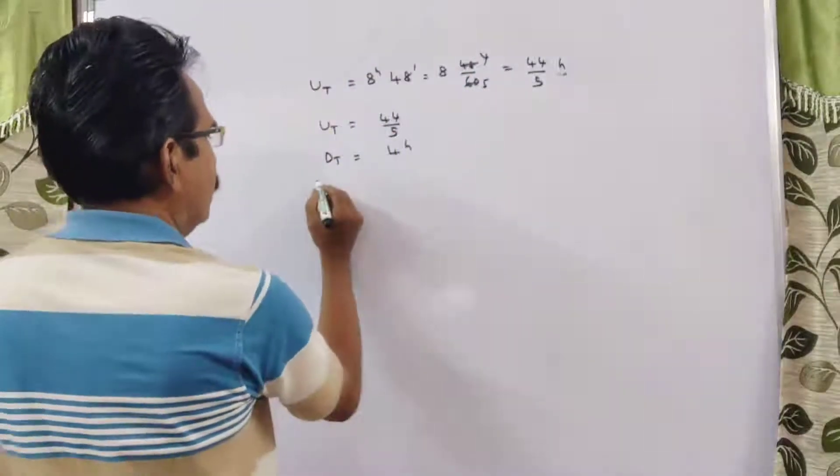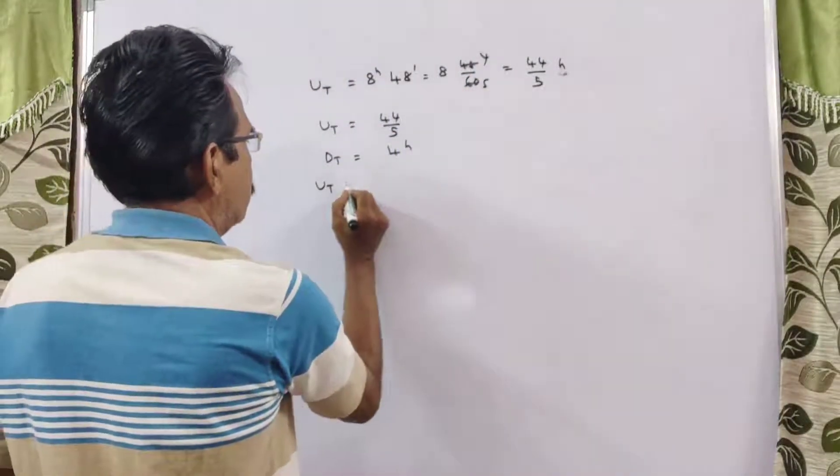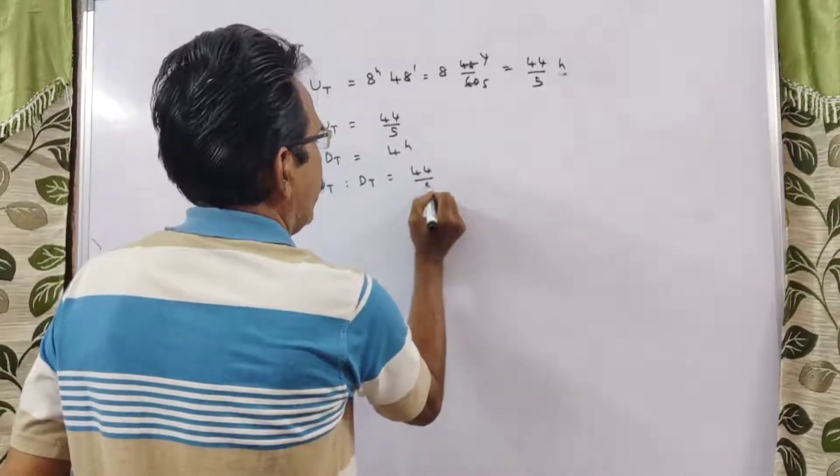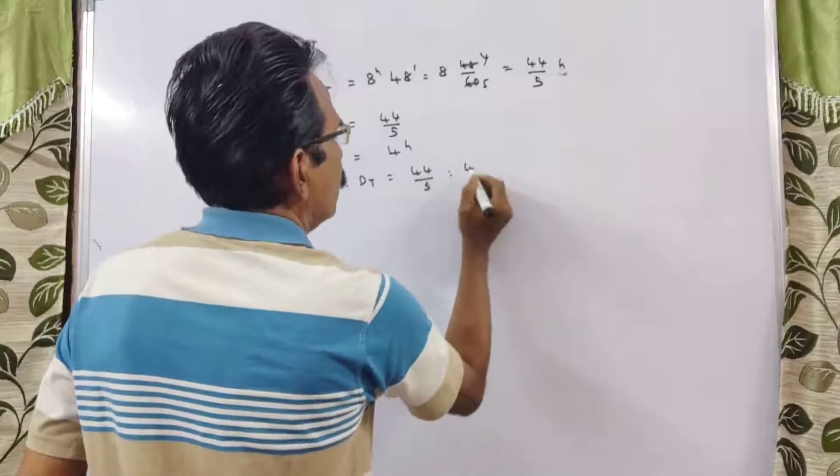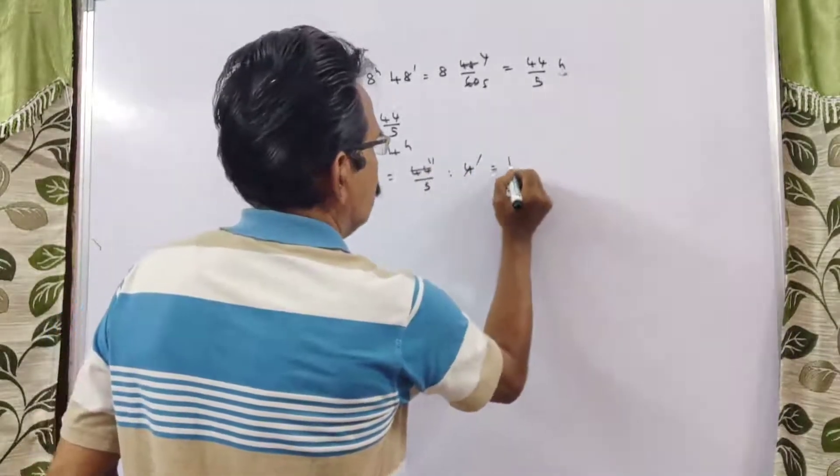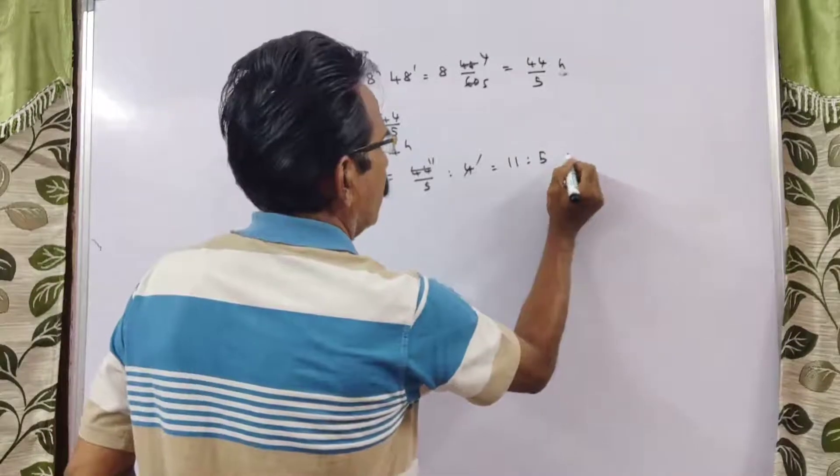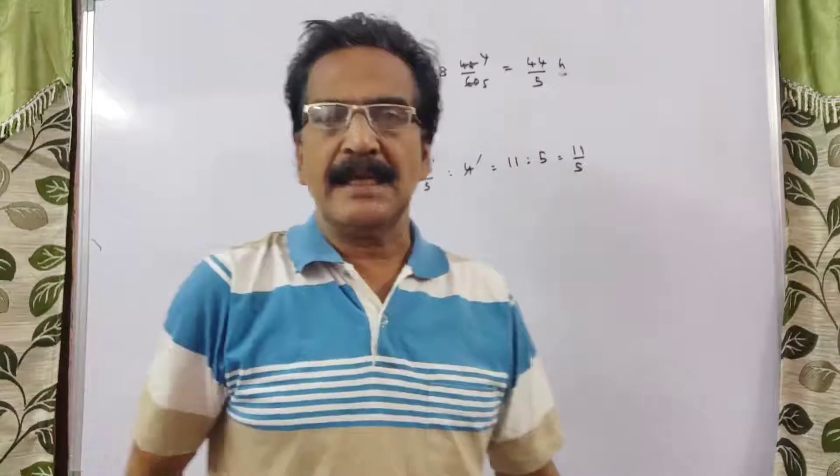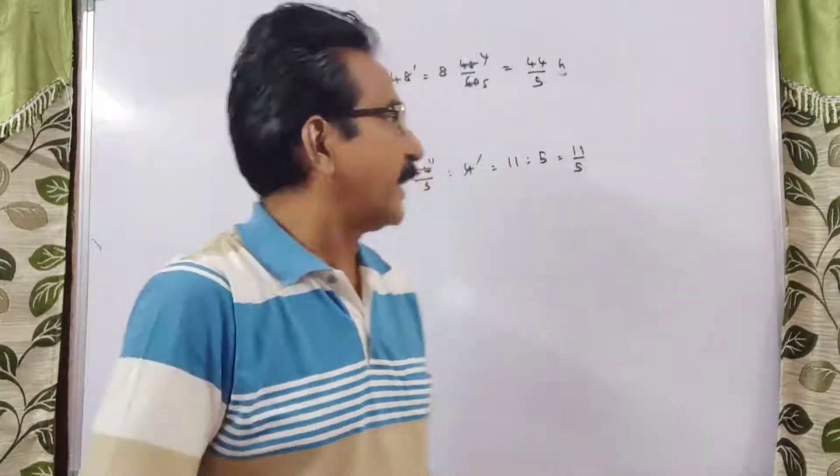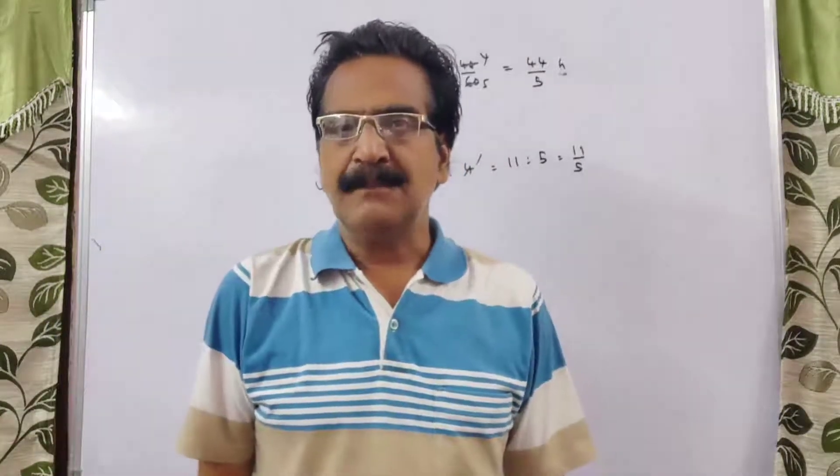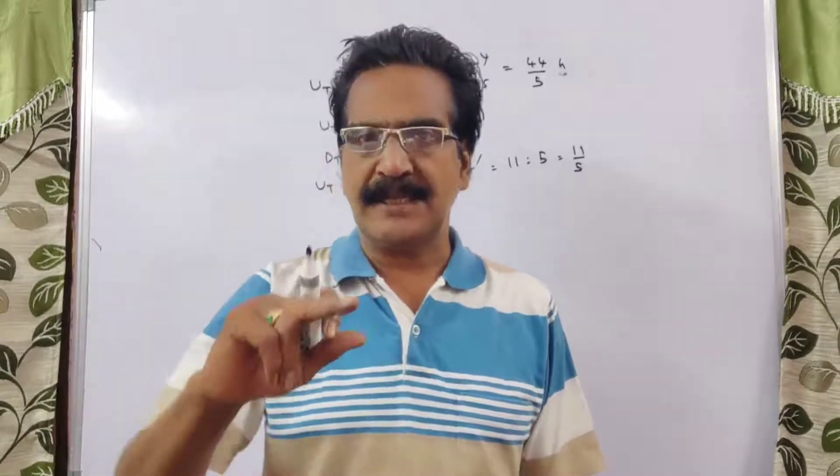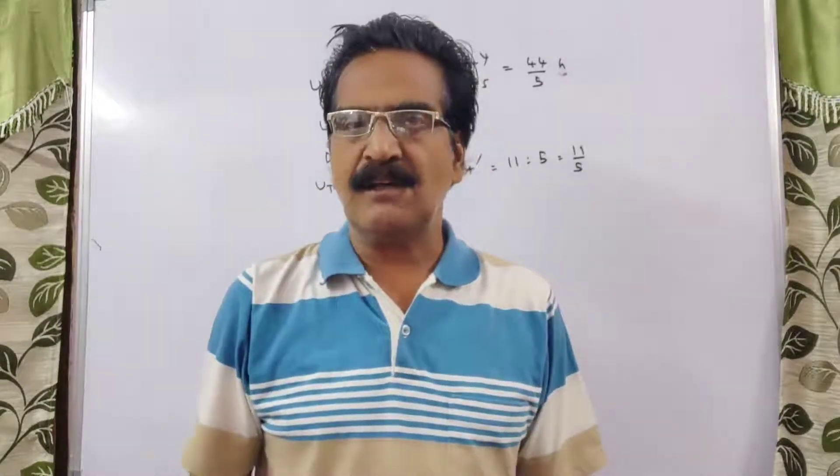Now the ratio of the times, upstream to downstream time, is equal to 44 by 5 to 4, that is equal to 11 to 5. Upstream time to downstream time ratio is 11 to 5. If you reverse this ratio, you will get the ratio of the speeds.